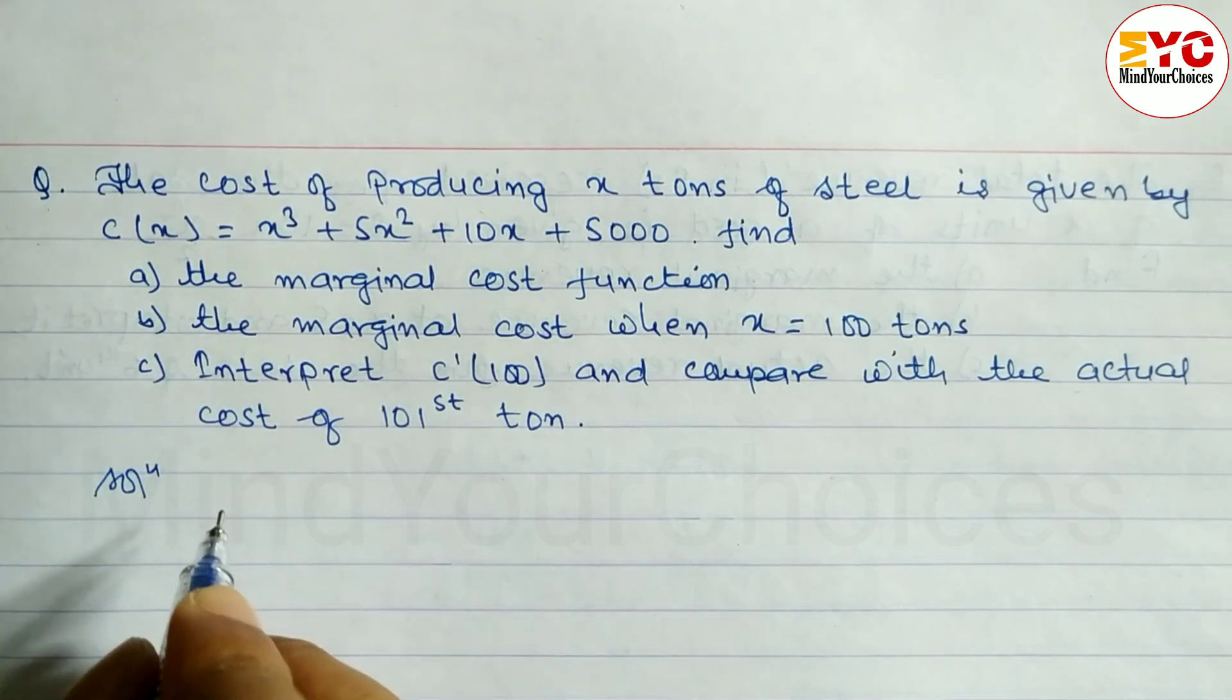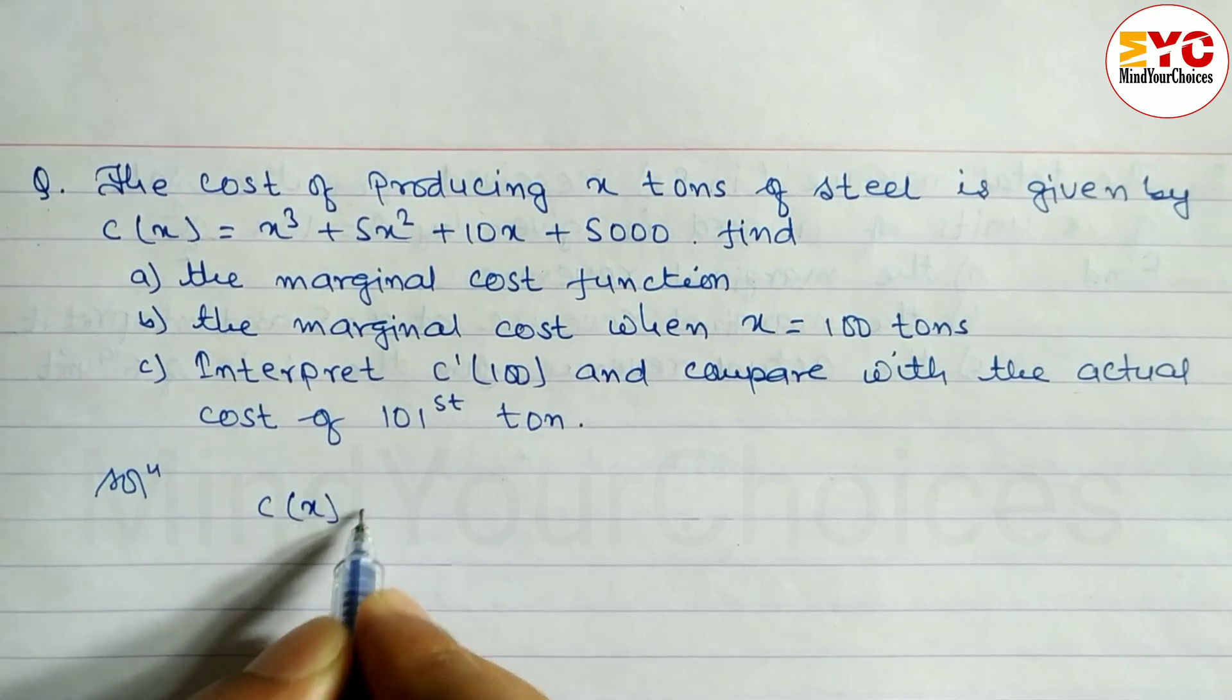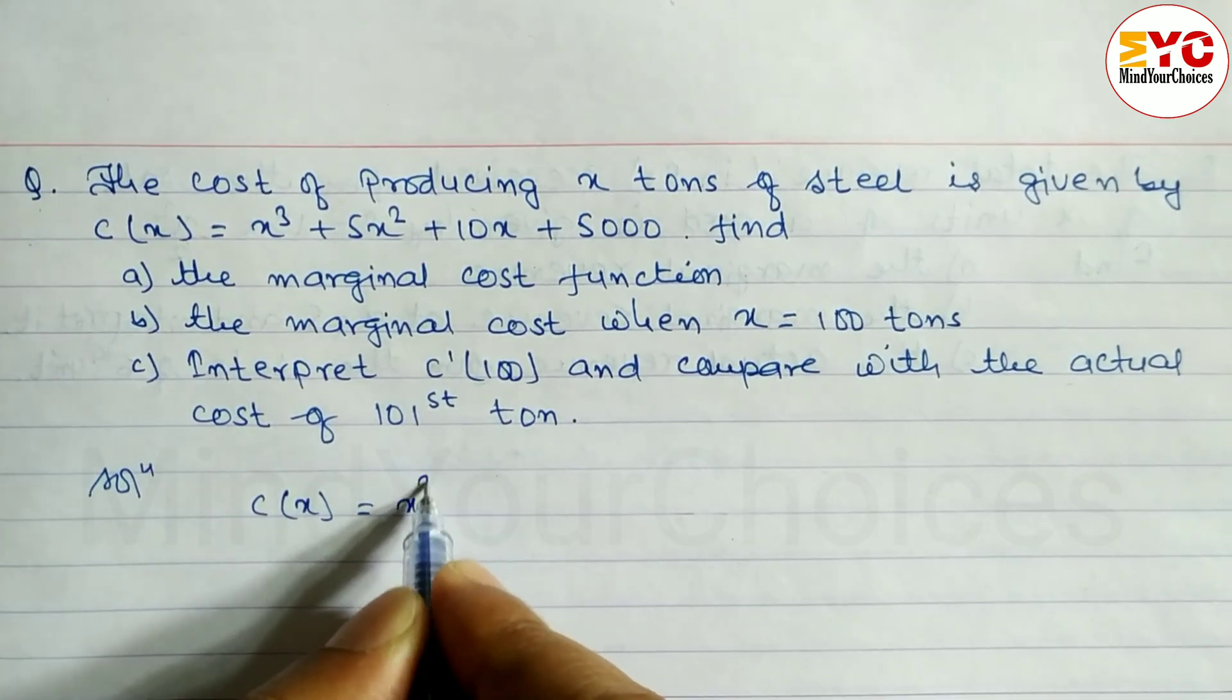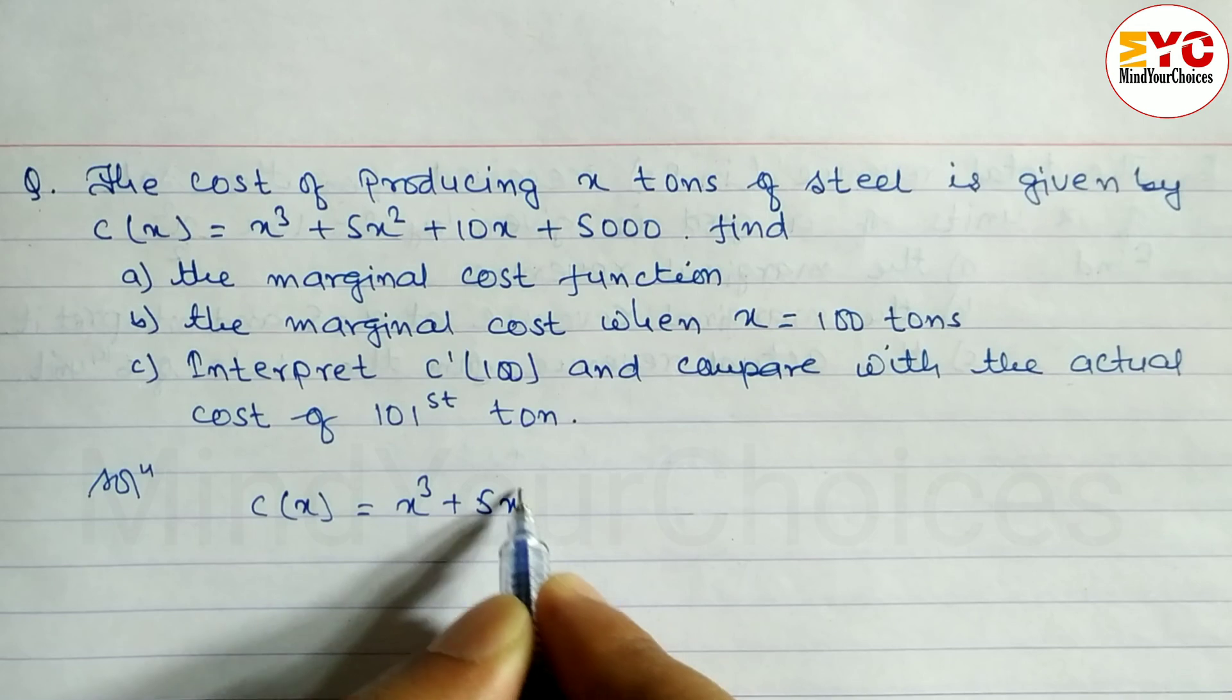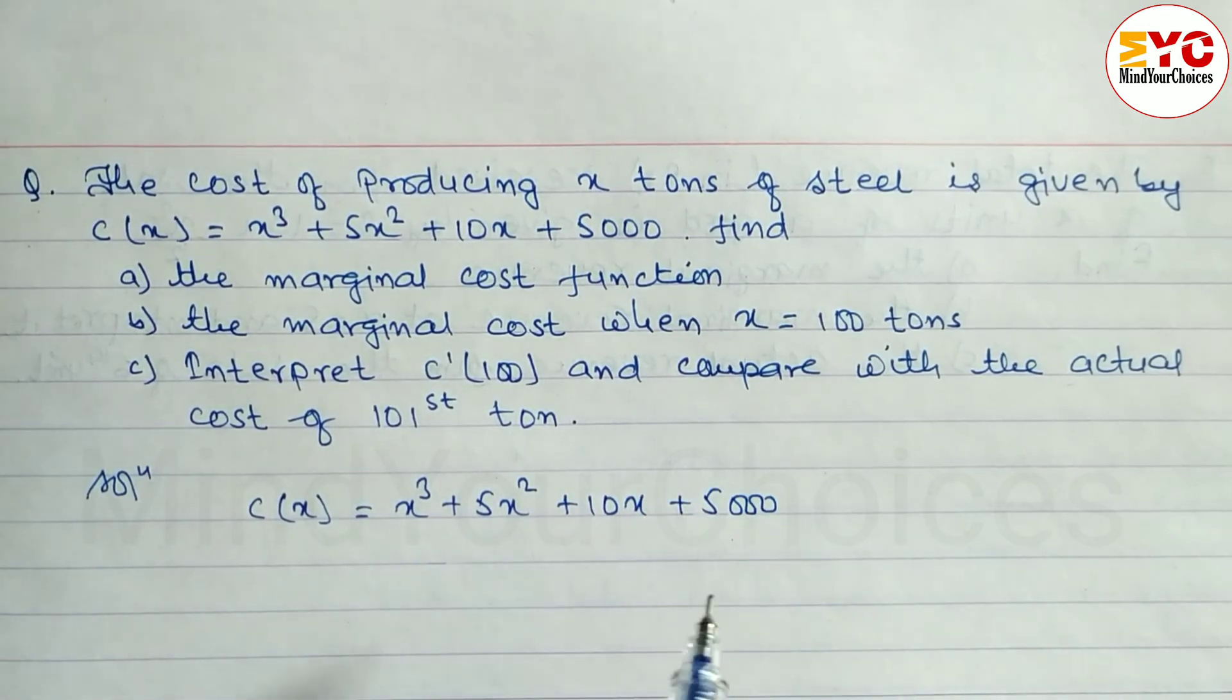The cost of producing function C(x) is equal to x³ plus 5x² plus 10x plus 5000. Okay, up to here.